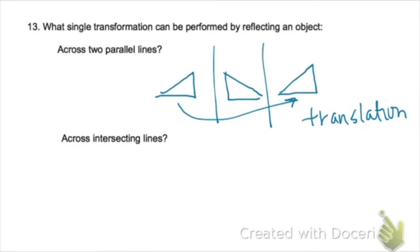If we start with this original figure and translate it over the first line, or sorry, reflect it over the first line, and then reflect again, it's just a single translation.